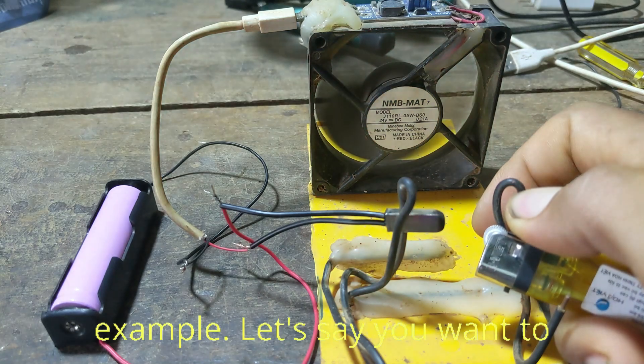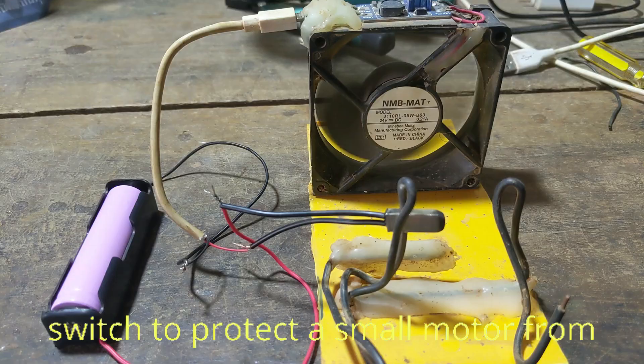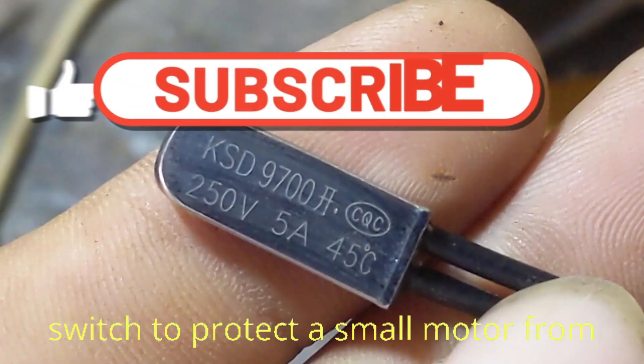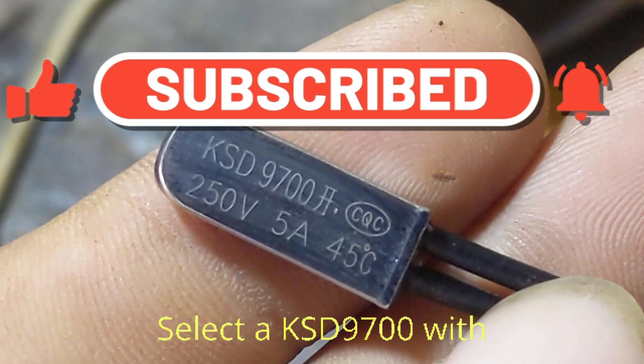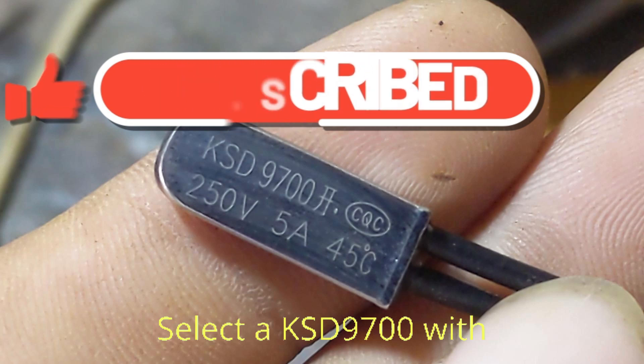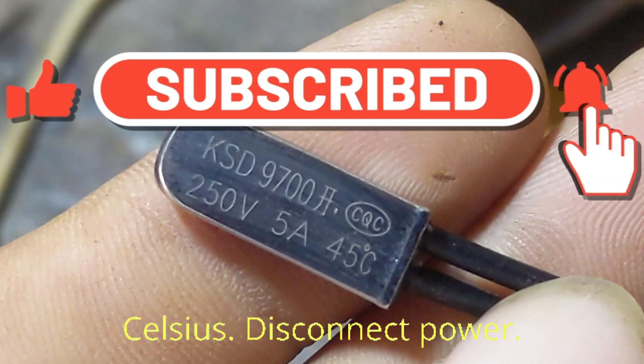Installation example: Let's say you want to install a KSD 9700 NC switch to protect a small motor from overheating. Choose the right rating: select a KSD 9700 with a temperature rating suitable for your motor, for example 80 degrees Celsius.